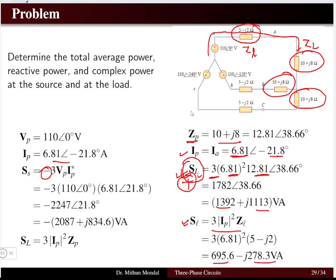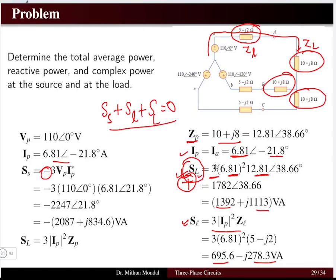By the law of conservation of energy, power must be conserved across the source, line, and load. Adding the source power, line power, and load power must equal zero, confirming the system is balanced and that conservation of power holds.